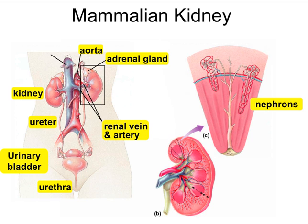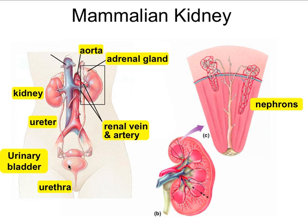Blood comes in through arteries to either kidney. The kidneys are made up of structures called nephrons — a million nephrons make up each kidney. The nephrons filter all the blood: the good stuff goes back into the vein to the vena cava and back to the heart. The bad stuff goes to the collecting duct, then through the ureter, into the urinary bladder, and out through the urethra.